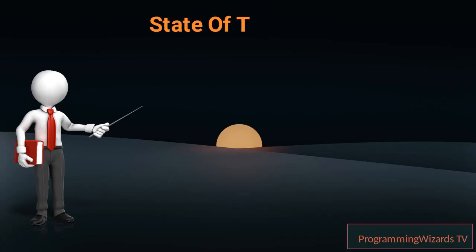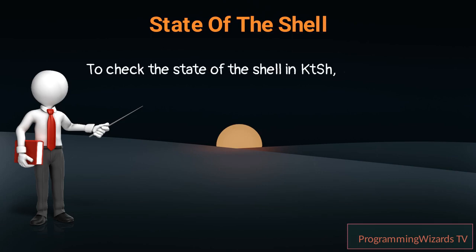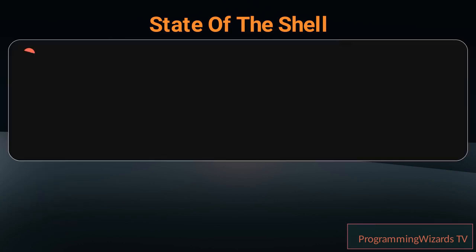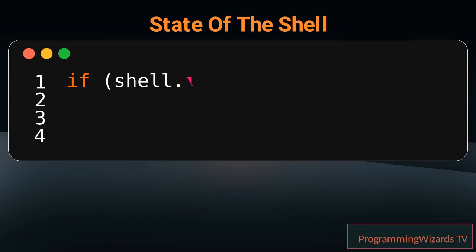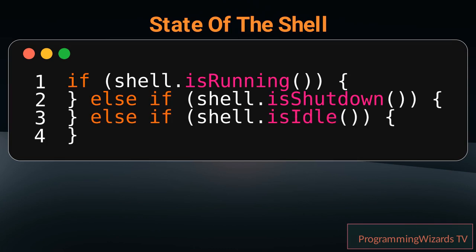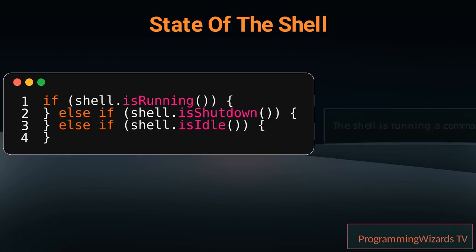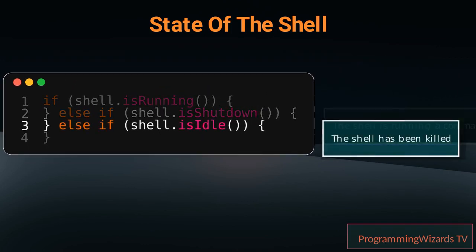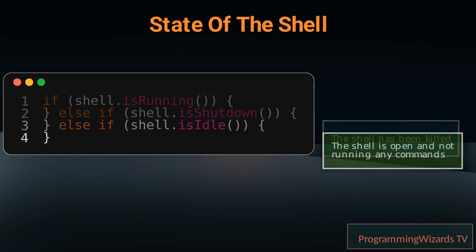How can I check the state of the shell? To check the state of the shell in KTSH, you can use the isRunning, isShutdown, and isIdle functions. isRunning indicates the shell is running a command; isShutdown indicates the shell has been killed; and isIdle indicates the shell is open and not running any commands.